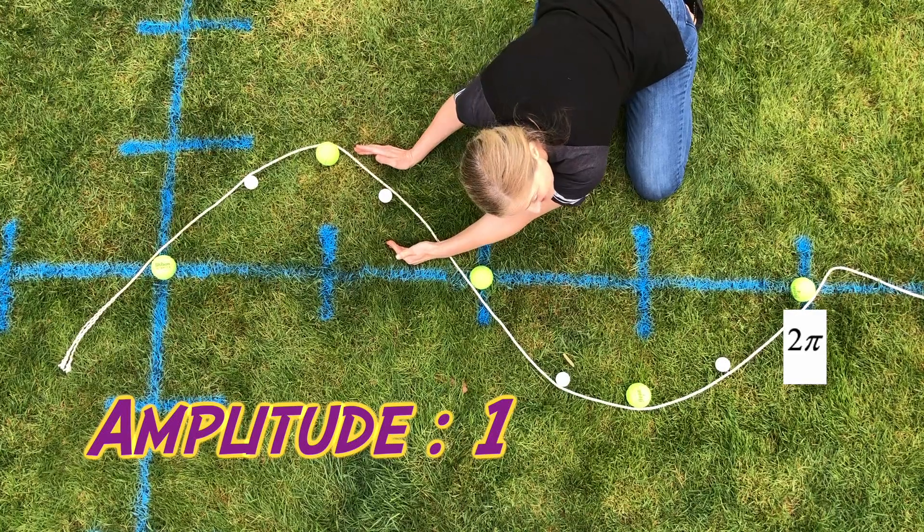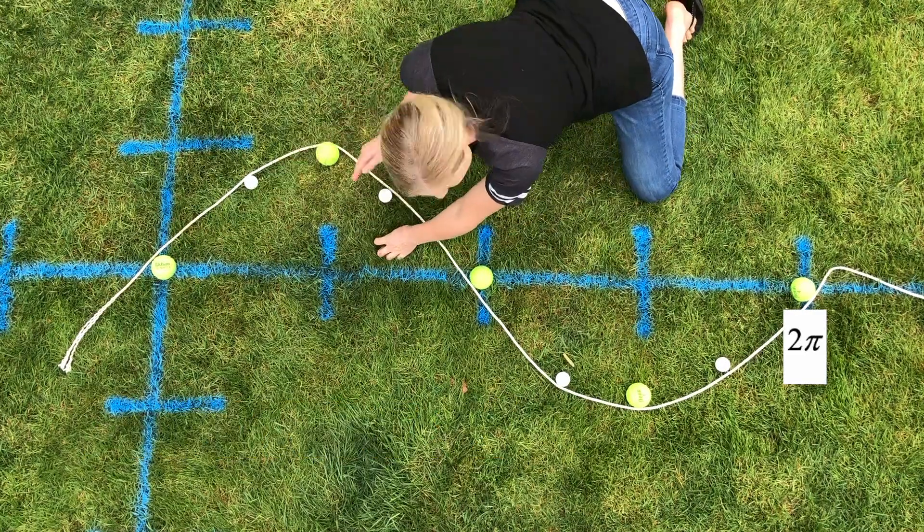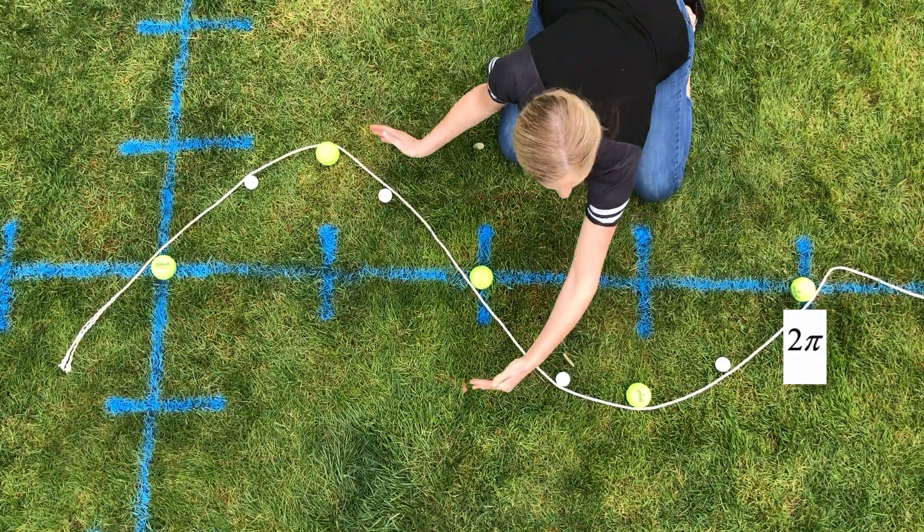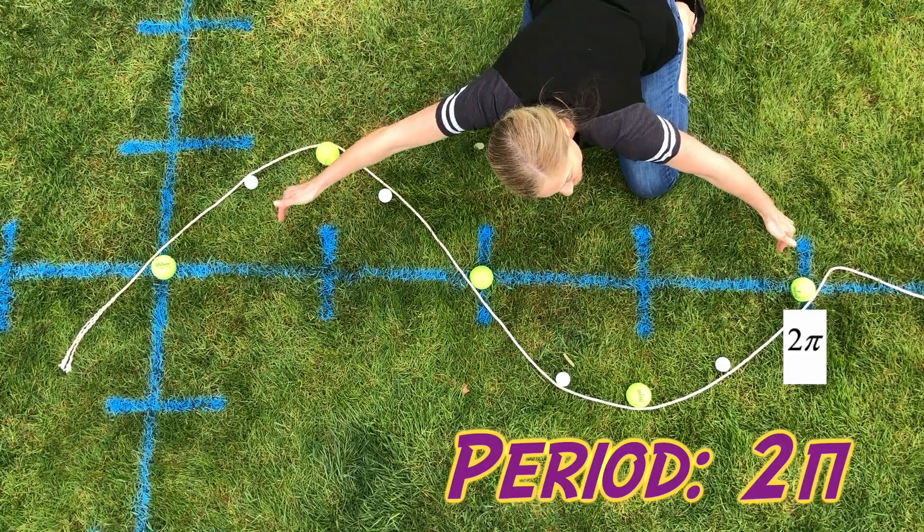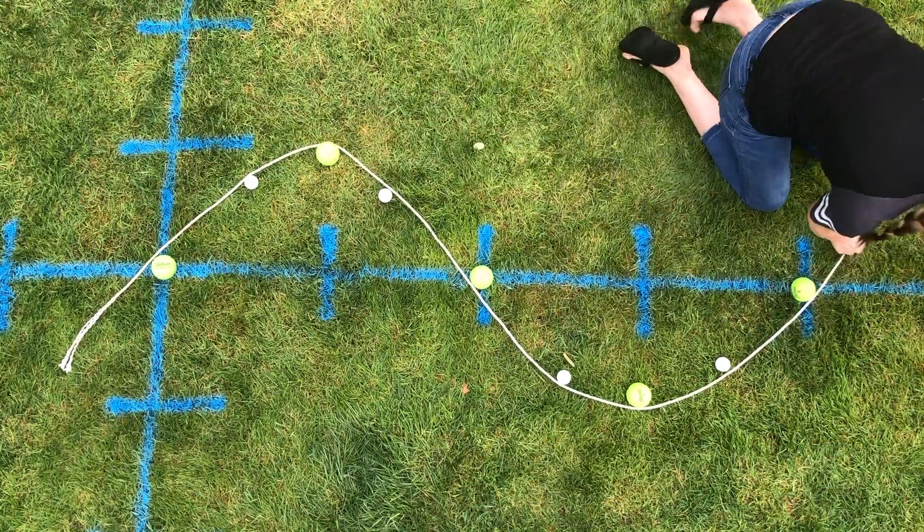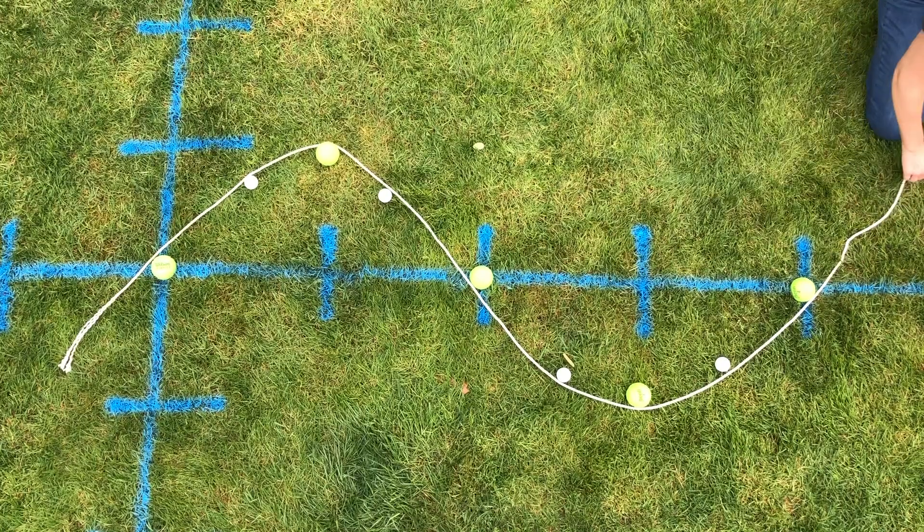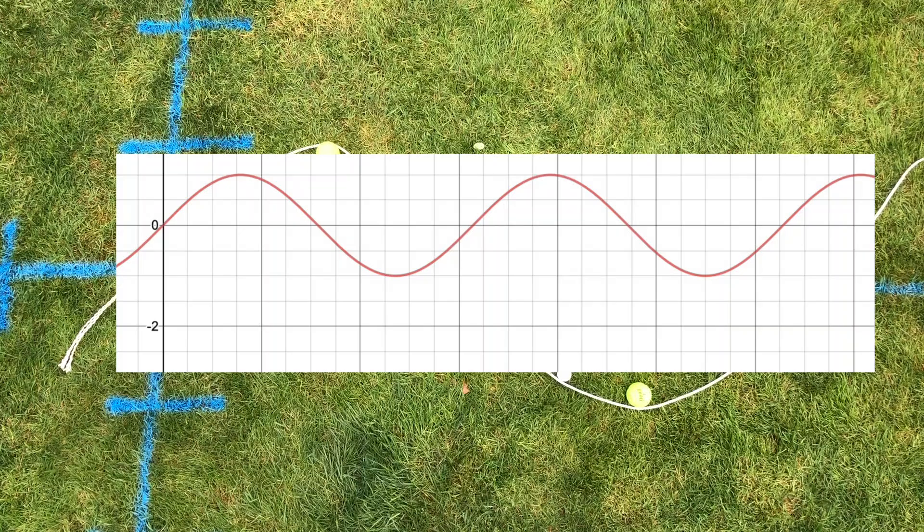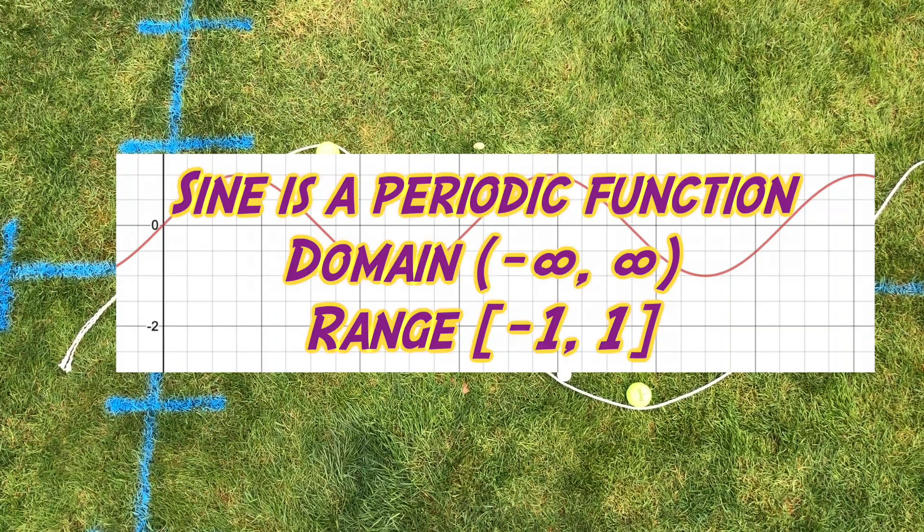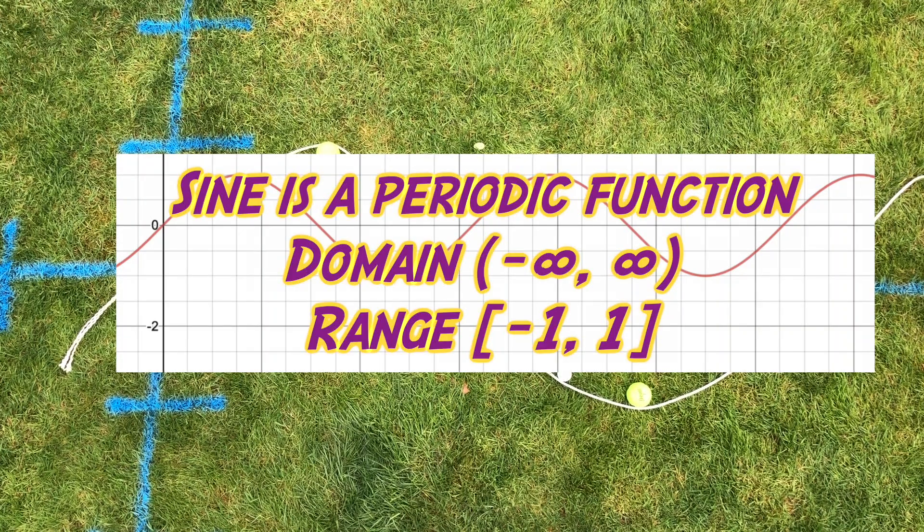So, the parent function, remember, zero high, zero low, zero, amplitude of one, and period is two pi. Now, this continues to go. So, remember, this never stops. But, of course, we're going to have to stop. And so on.